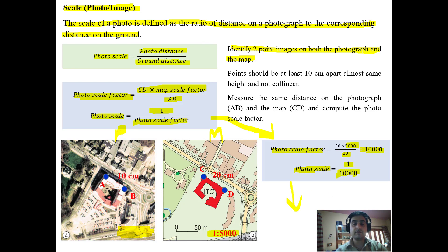So the photo scale will be equal to 1 upon 10,000. This is how we determine photo scale from a map which has a predetermined scale by identifying two points on both the map as well as the photo.